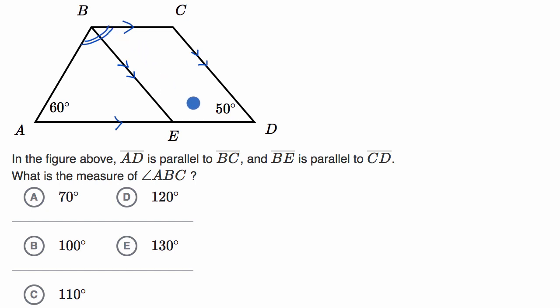But there tends to be multiple ways to do this. So one thing that jumps out at me, because BE is parallel to CD, and you could view segment AD as a transversal, if this angle is 50 degrees, then you have this corresponding angle right over here that is also going to be 50 degrees.